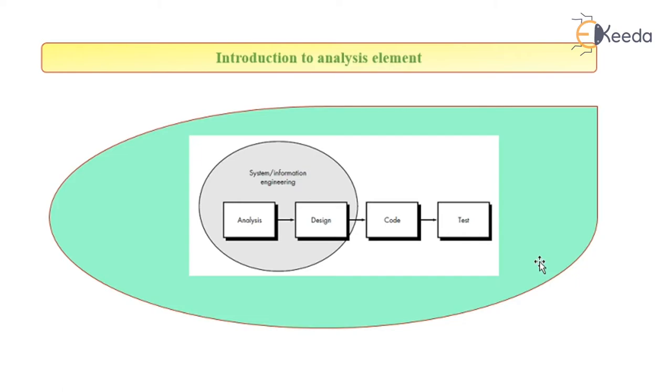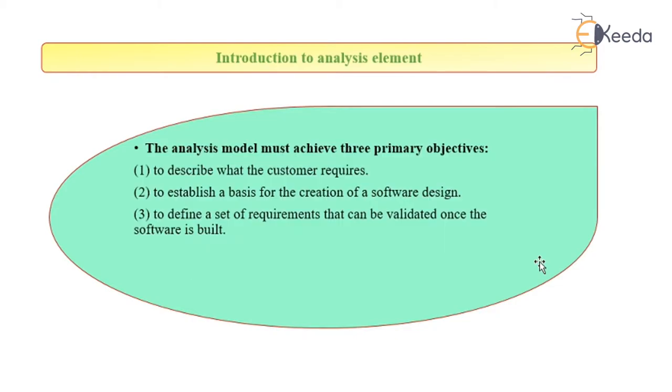So analysis is the system information phase or the information gathering phase. Analysis model must achieve three primary objectives: to describe what the customer wants, to establish a basis for the creation of a software design, and to define a set of requirements that can be validated once the software is built.